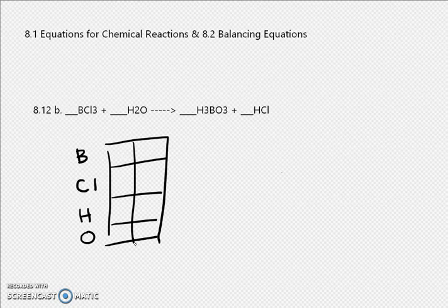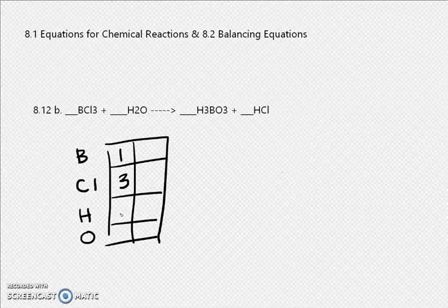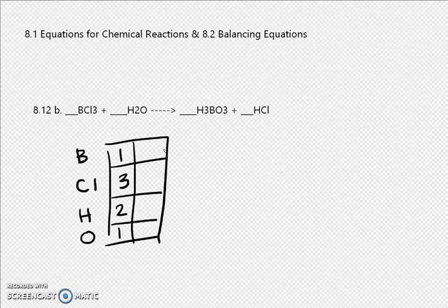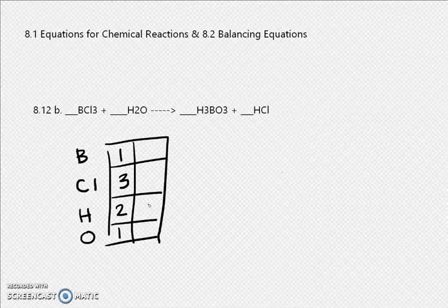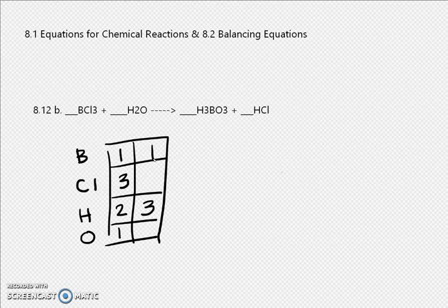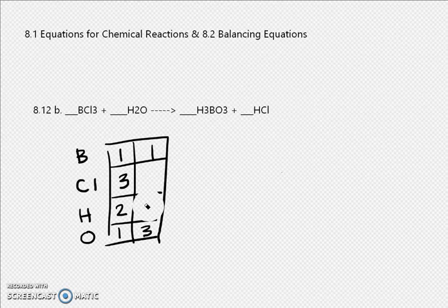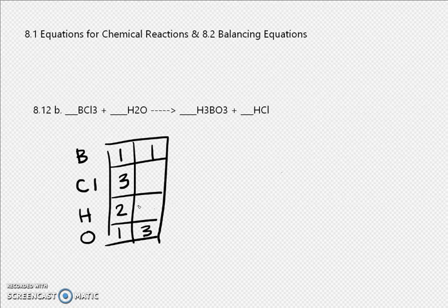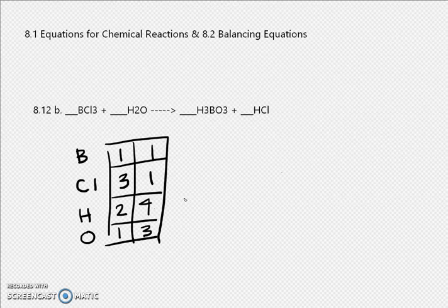On the left side we have 1 B, 3 Cl, 2 H, and 1 O. On the right side we have 3 of something, 3 Cl, 1 H, and — wait, we actually have 4 oxygens on this side, and 1 on the other side. Let's start with the hydrogens.